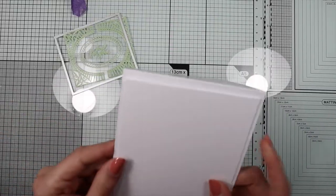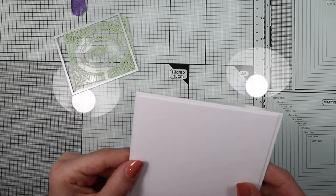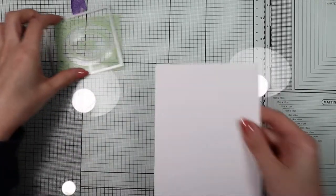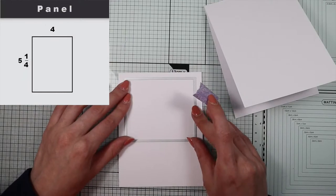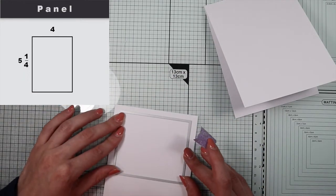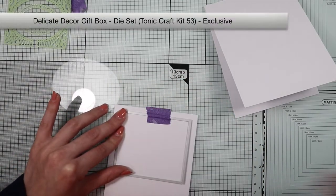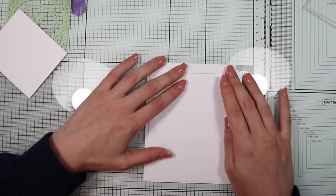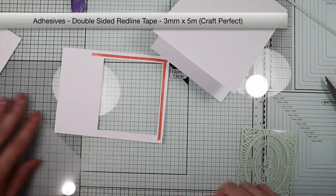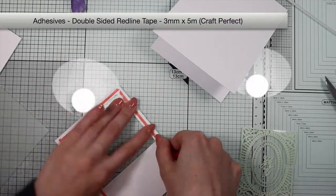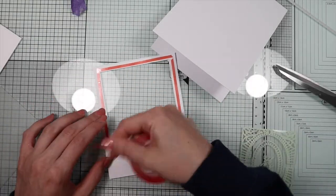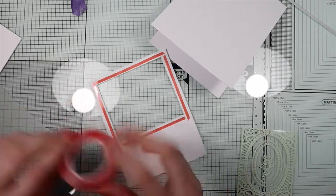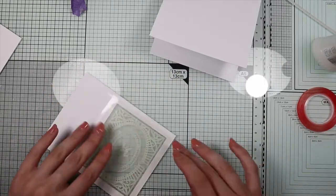The card number four for this kit will be a shaker card. So on a four by five and a quarter inches wide panel I'm going to die cut a window with this die from the kit. On the back of the panel I'm going to apply the double-sided tape adhesive included in the kit and I'm going to attach the acetate.